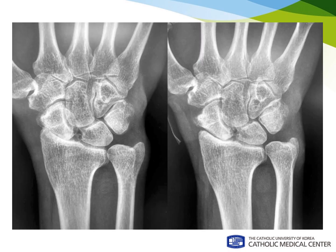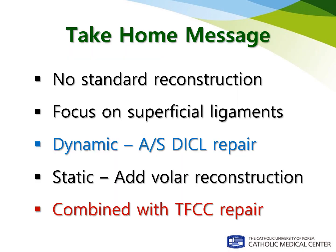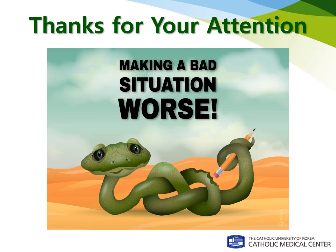Although not always indicated, this procedure may be effective for a SNAC wrist patient who refuses any type of partial wrist fusion. In summary, I would like to introduce arthroscopic dorsal intercarpal ligament augmentation for dynamic scapholunate instability. I have been performing this in more than 40 patients since early 2020, and the short-term results are promising. I hope I am not making a bad situation even worse with this procedure. Thanks for your attention.